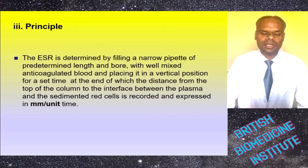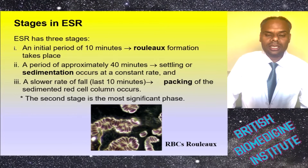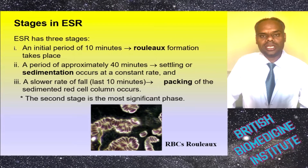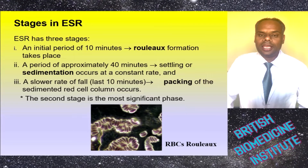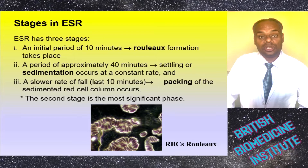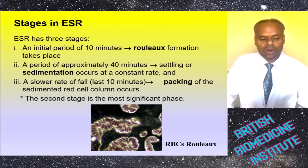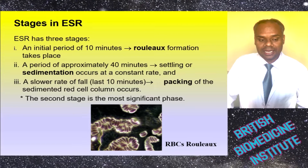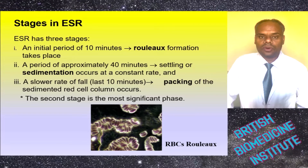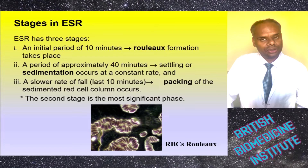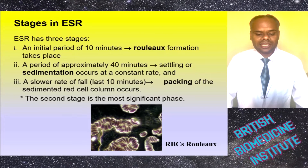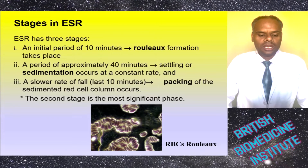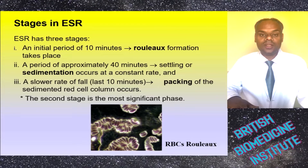There are three stages. In an initial period of approximately 10 minutes, rouleaux formation takes place. In a second period of approximately 40 minutes, settling or sedimentation occurs at a constant rate. In the third stage, lasting approximately 10 minutes, a slower rate of fall occurs where packing of the sedimented red cell column takes place. The second stage is the most significant phase.